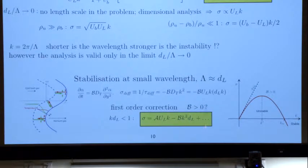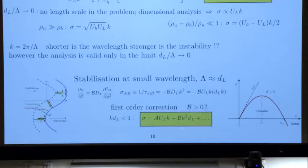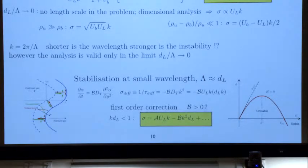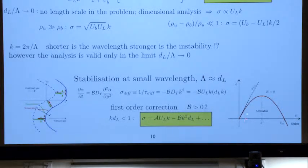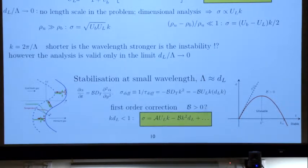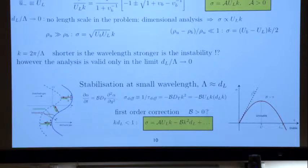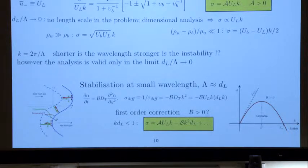So, k — this is Darrieus-Landau instability — when the wave number becomes large, the k-squared term dominates the k term. Landau-Darrieus is here, and with the k-squared term you stabilize the small wavelengths. As soon as the wave numbers become sufficiently large, you have to take into account these transverse diffusion effects, and this is going to stabilize the flame for small wavelengths.